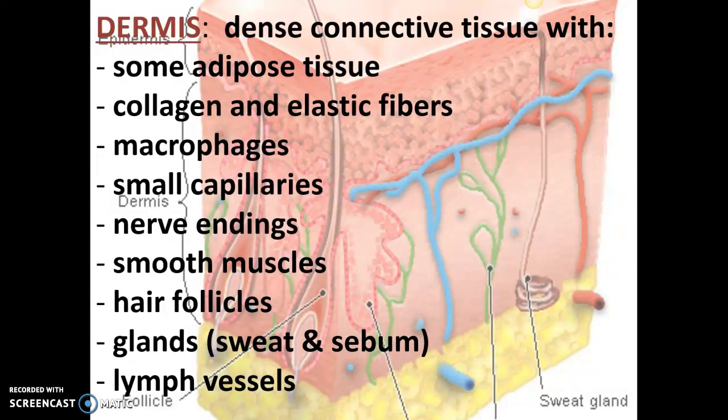Now we come to the dermis, the middle layer. It's made of dense connective tissue — densely packed collagen fibers, very tough. This is the part of the skin we scrape off the subcutaneous layer and treat to make leather. Leather belts, leather boots, and other leather products are made from cow's dermis.